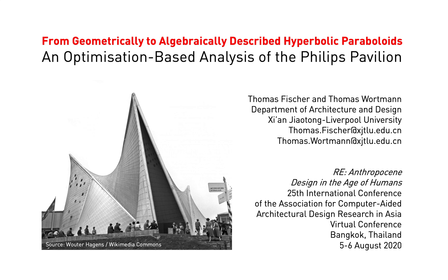While it can be straightforward to translate an algebraic description of a hyperbolic paraboloid into a geometric one, doing the opposite is not as straightforward as one might expect. The hyperbolic paraboloid surfaces of the 1958 Phillips Pavilion, for example, have so far only been described geometrically, but not in terms of algebraic parameters.